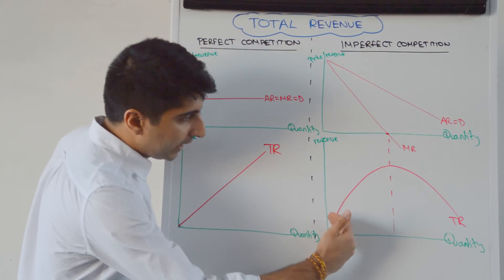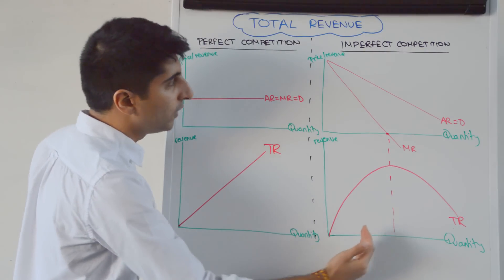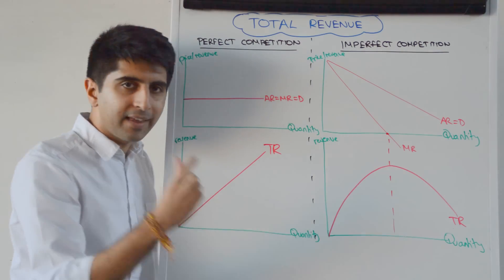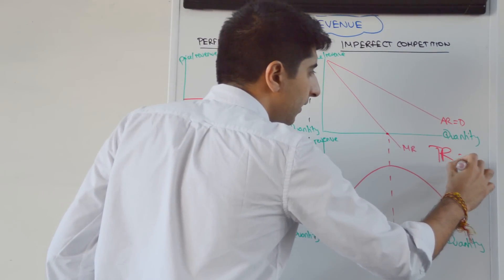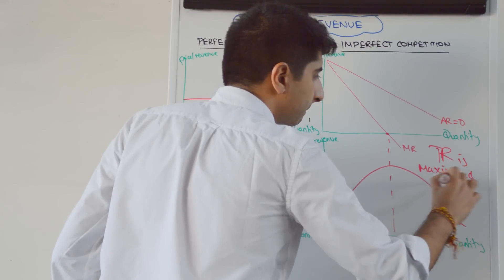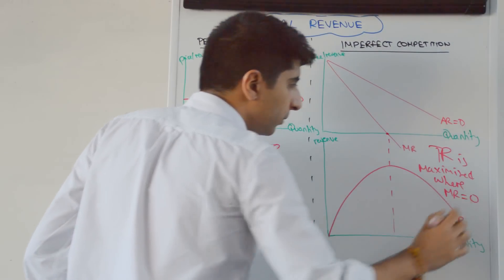So it's increasing total revenue but at a slower rate as more units are being sold because marginal revenue is decreasing up until we get to MR is zero. So we can say that TR is maximized where MR equals zero.